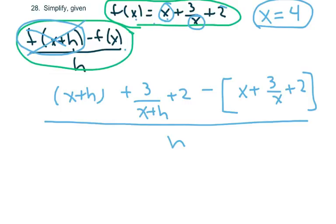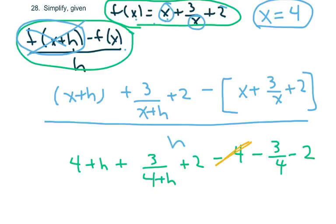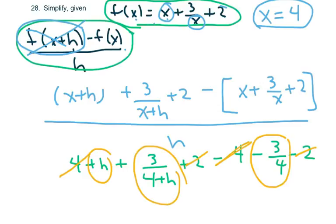Now I'm going to go ahead and input my 4. So everywhere there's an x, I'm going to put 4 now. So, 4 plus h plus 3 over 4 plus h plus 2. And I'm going to go ahead and distribute my negative. Minus 4 minus 3 over 4. Minus 2. Now I'm going to kind of simplify. These go away. These 4's go away here. My 2's go away.